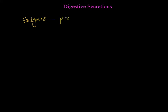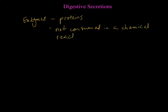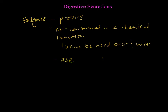Some characteristics of enzymes: they are made of proteins, and enzymes are not consumed in a chemical reaction — in other words, they can be used over and over again. When naming enzymes, they usually end in the suffix '-ase,' such as lipase or nuclease.